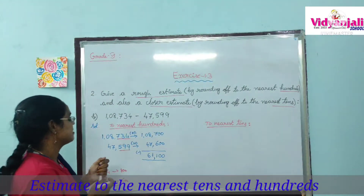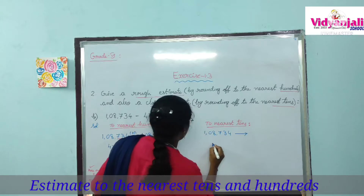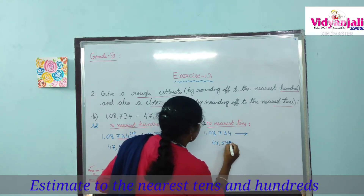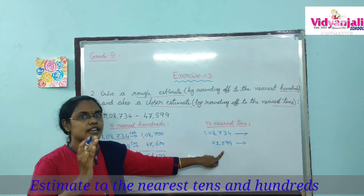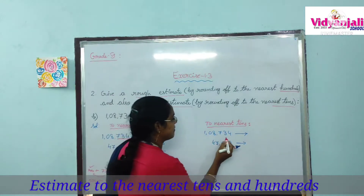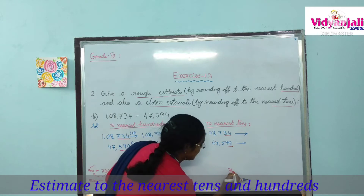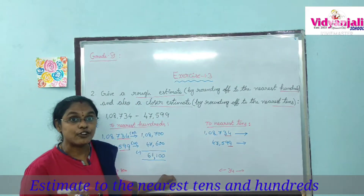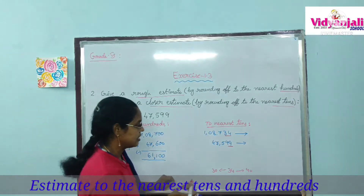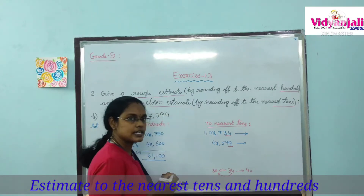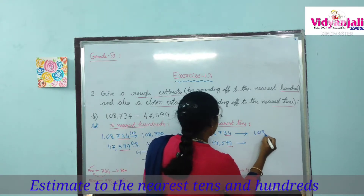Now let us find the closure estimate — rounding off to the nearest tens. Writing the question again: 1,08,734 and 47,599. The tens part of the first number is 34. Now, 34 lies between 30 and 40. Is 34 nearer to 30 or 40? It is near to 30. Wait — it is near to 30, so we write 1,08,730.